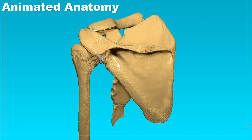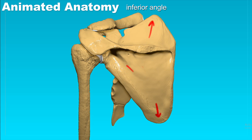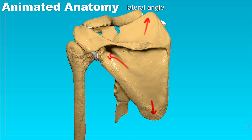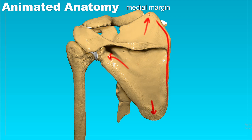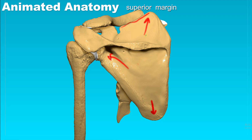It has three angles: this is the superior one, and then it also has the inferior one and the lateral one. Between these angles it also has three margins: this would be the lateral, then the medial margin, and the superior margin.